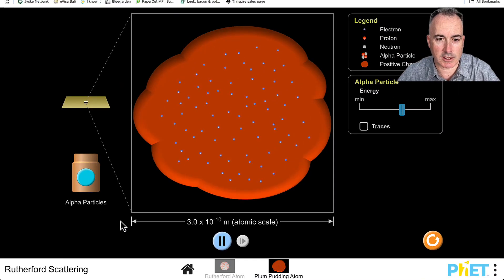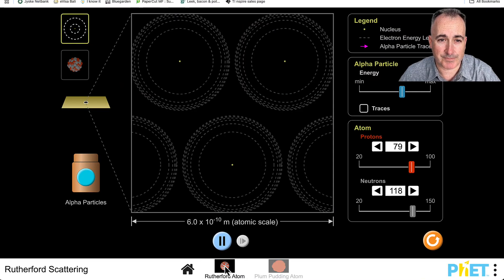I'll go back to PhET, and this time we'll change it to the Rutherford atom. We're going to be looking at gold—79 protons. We're going to be doing the same kind of thing, firing alpha particles at them.